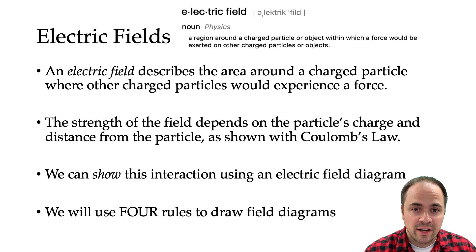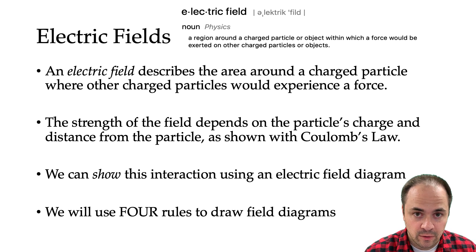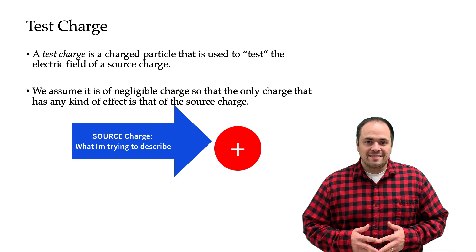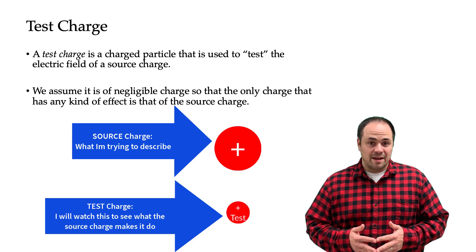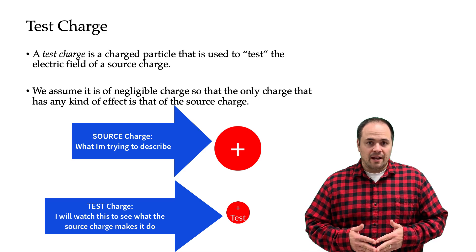Now there are four rules that we are going to use to draw electric fields. But first we are going to take a look at an example that leads us into our first rule. I would use a test charge to place in the field — and just as the name denotes, a test charge tests the field. We watch its behavior to see what it does in the field, and that helps us describe the source charge.